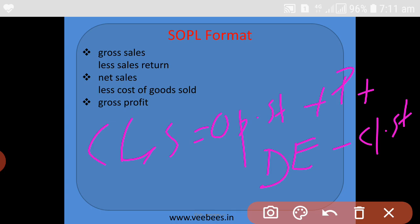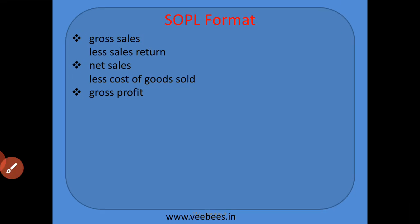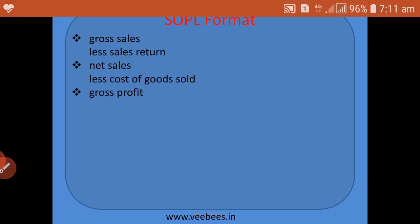Once more: cost of goods sold is equal to opening stock plus purchases plus direct expenses minus closing stock. After deducting cost of goods sold, we will get the gross profit.